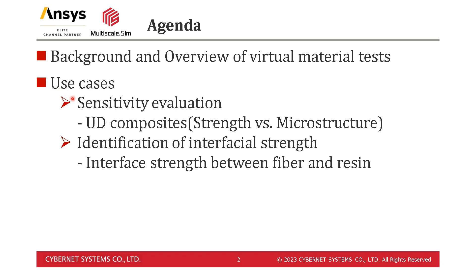A first case is a sensitivity analysis on the strength of UD composites. The analysis will reveal the effect of variations in the microstructural components on the macroscopic strengths. This analysis also motivates the next use case: the strength of UD composites strongly depends on the strength of the material interface, meaning the input values for material interface strength must be highly reliable. The purpose of the second use case is to identify the strength of the material interface.